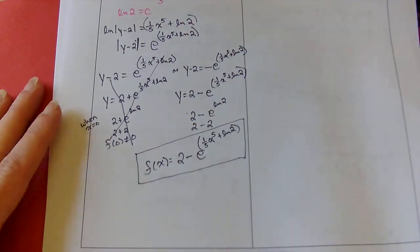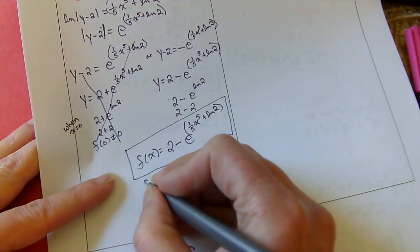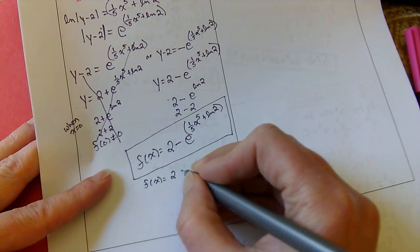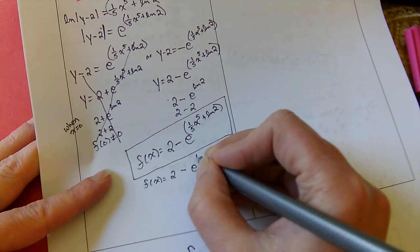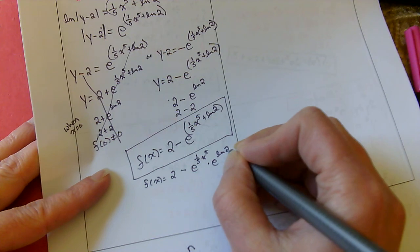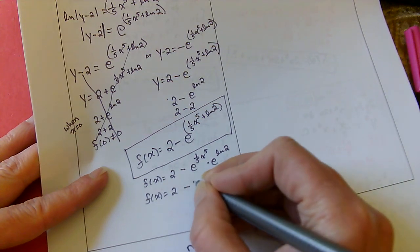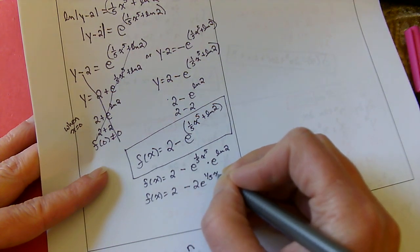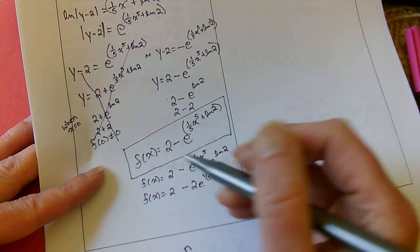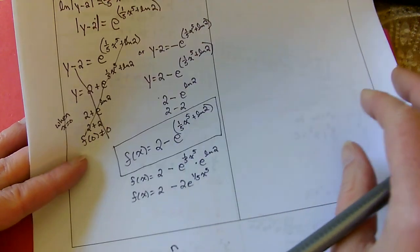This could have been cleaned up a little bit better. If it was in a multiple choice, just to remember how to clean that up, this would be the same as having e to the 1/5 x to the 5th times e to the natural log of 2, which is just 2. So these two statements are equivalent — all three of these are equivalent. On a free response, you would be fine stopping here. On multiple choice, they would probably have the answer reduced down to that.